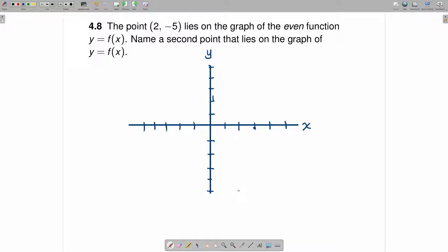The point 2, negative 5 is right here. We don't know what the function is, but we do know that the function is even. If it is even, it is symmetric about the y-axis.